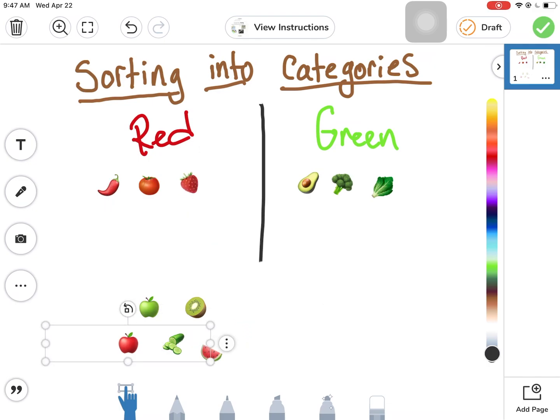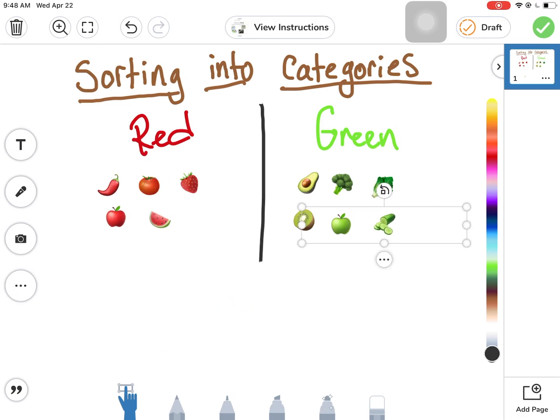We're sorting strawberries, my red apple, my kiwi, my green apple, my watermelon - even though it has a green skin, we're going to say that the yummy part is red - and a cucumber.